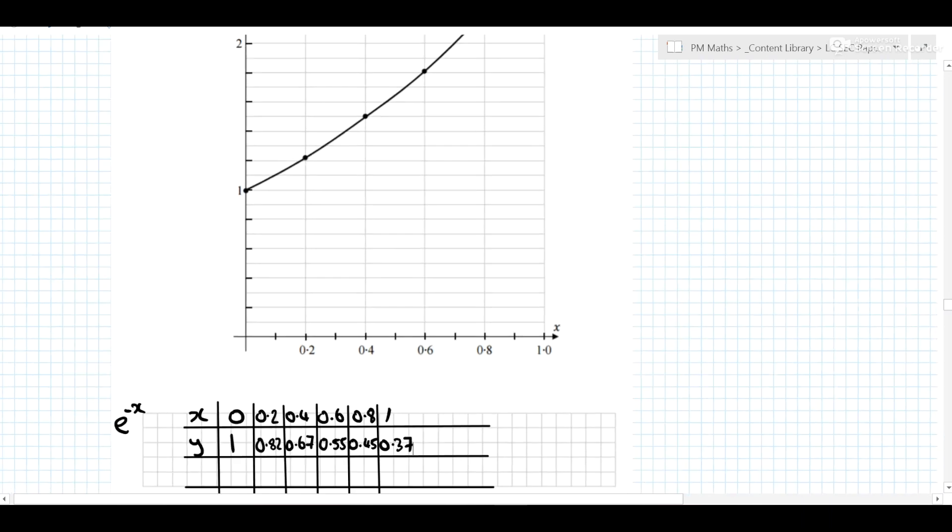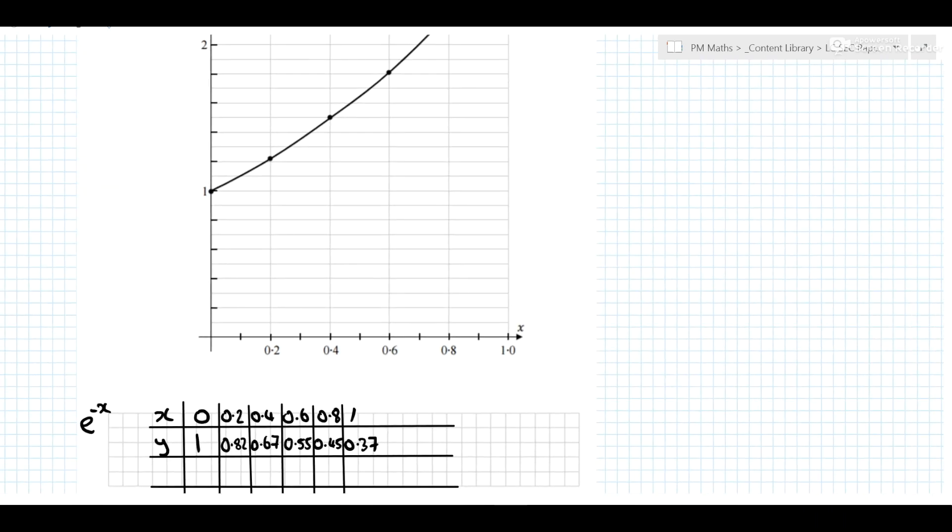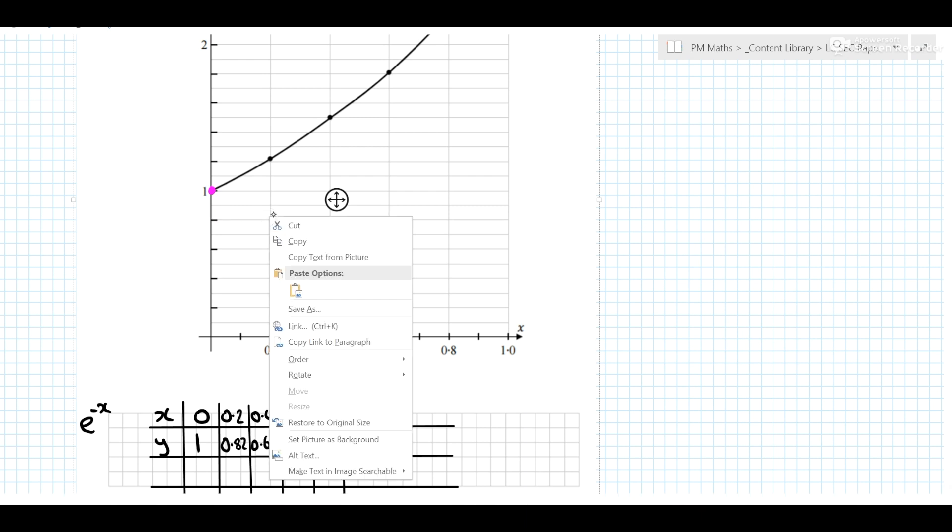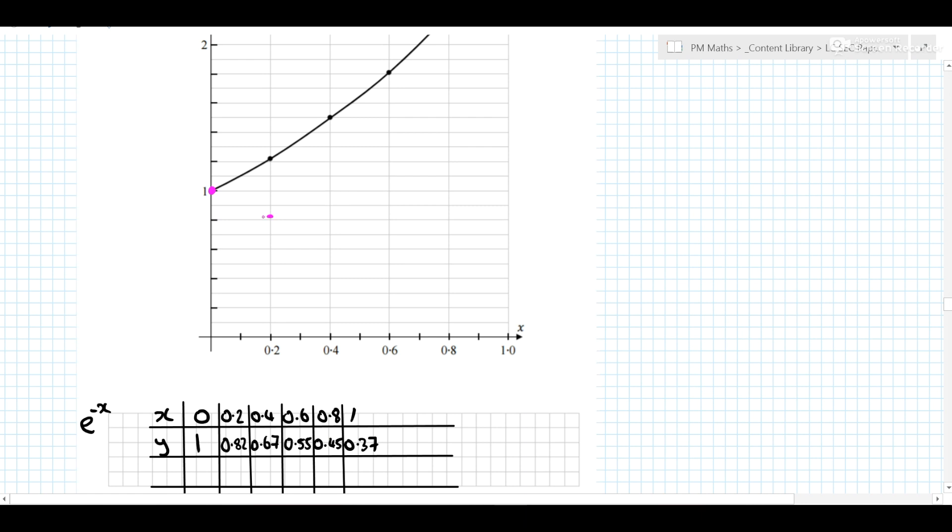So let's go in purple. 0.2 goes to 0.82 here. 0.4 goes to 0.67, so 0.5... 0.67 just under 0.7,